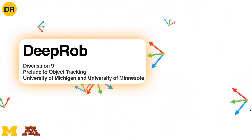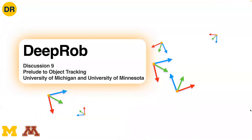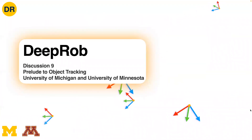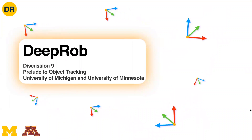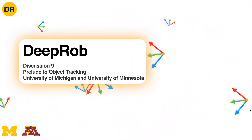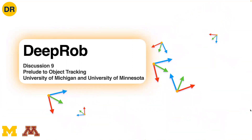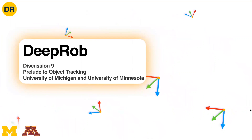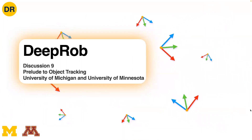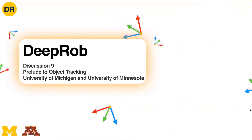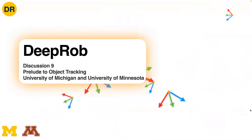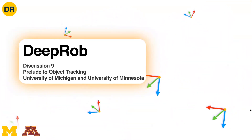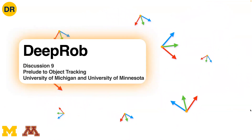Regarding quiz nine starting next Tuesday: any ideas covered by the seminar presentations are fair game. Questions won't dig into the appendix of papers or nitty-gritty details not covered in class. For example, normalized object coordinate space — the concept of mapping every point on an object's surface to a unit cube in 3D space — is fair game since it was covered in class. To prepare, review the slides or notes from those seminars.